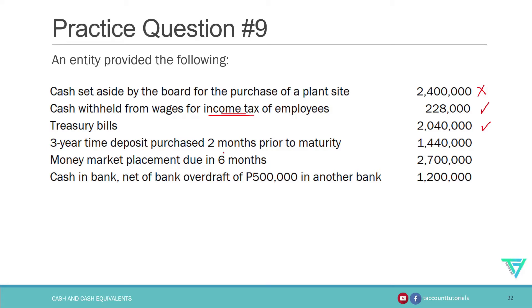Next is a three-year time deposit purchased two months prior to maturity. The original term of the deposit is three years, however it's not relevant in determining whether it is cash and cash equivalent. The relevant date is the date of acquisition. Since it was purchased two months prior to maturity — that's three months or less — it is classified as cash equivalent.